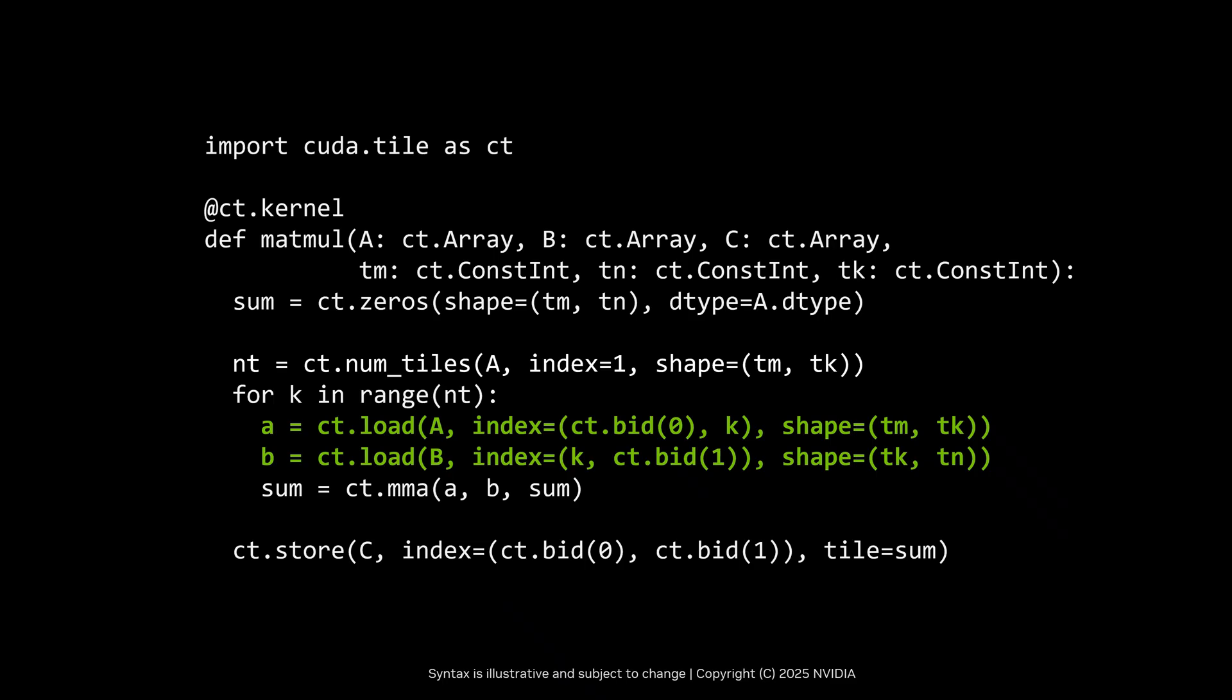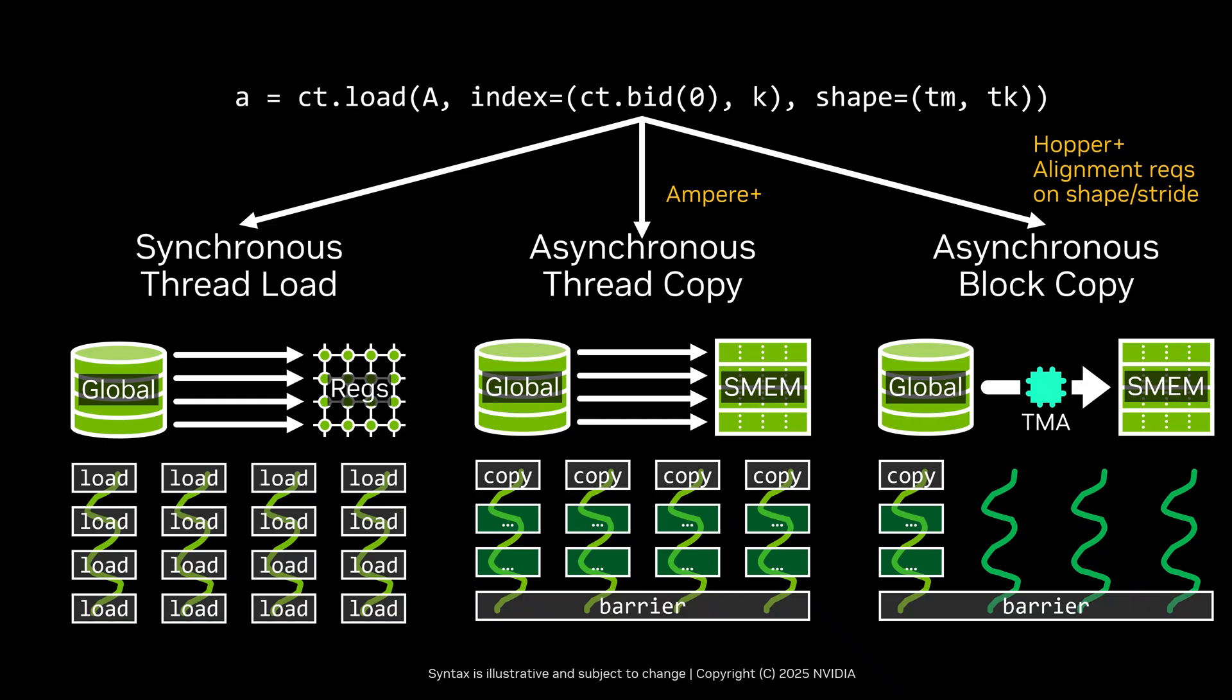The load and store operations are a portable abstraction over the many different strategies for memory movement that are available in CUDA. For example, load could lower to traditional synchronous instructions, potentially vectorized. Or it could use the asynchronous thread copy instructions available in newer GPUs, allowing the memory movement to be overlapped and pipelined. We could also use the tensor memory accelerator to perform asynchronous block-wide loads and stores, allowing for even more overlap of compute and I/O. The system will pick the best option available, given the constraints of the memory access pattern you've specified and the hardware you're running on.